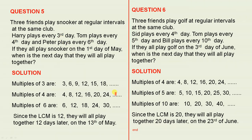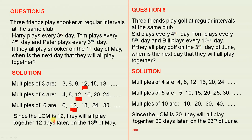The multiples of 4 are there because of the fourth day, and the multiples of 6 are here because of the sixth day. We can see we have 12, 12 and 12 — that is the lowest number that occurs in each of the groups. Since the LCM is 12, they will all play together 12 days later on the 13th of May.